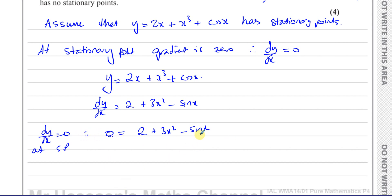Therefore we can say 2 plus 3x squared minus sine x equals zero. Now if I rearrange this, that gives me sine x equals 2 plus 3x squared.